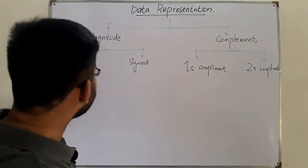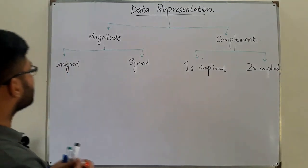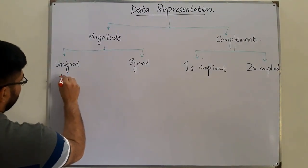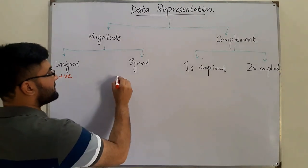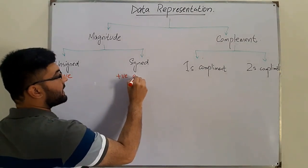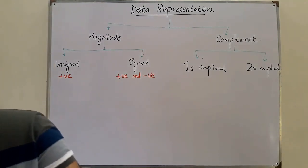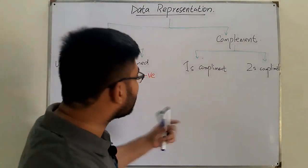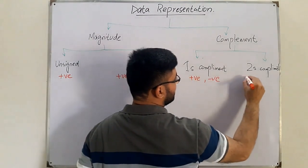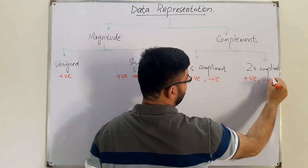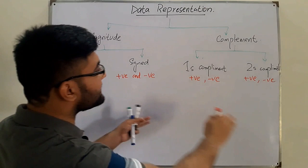For unsigned magnitude, we can only represent positive binary numbers. In sign magnitude, we can represent both positive and negative numbers. Similarly, in the one's complement and two's complement forms, we can also represent both positive and negative numbers.